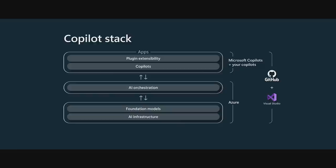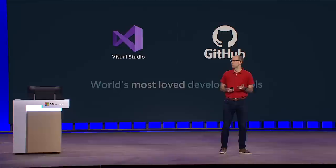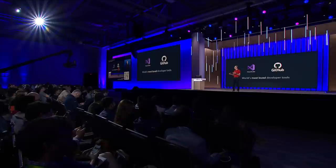I'm going to build on his talk and walk you through how we're going to make it easy to develop these AI solutions using Azure, GitHub, and Visual Studio. We're going to show a lot of code today and introduce you to some amazing new capabilities that we're announcing and releasing here at Build. Let's start by talking about Visual Studio and GitHub.